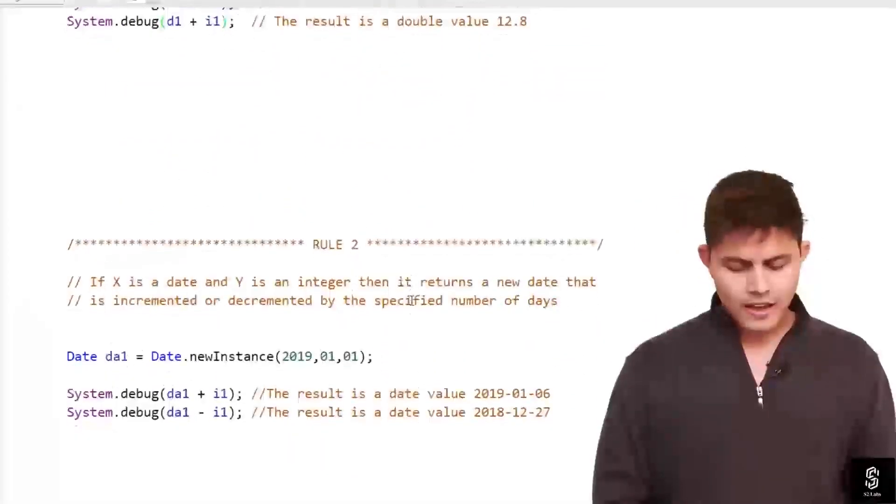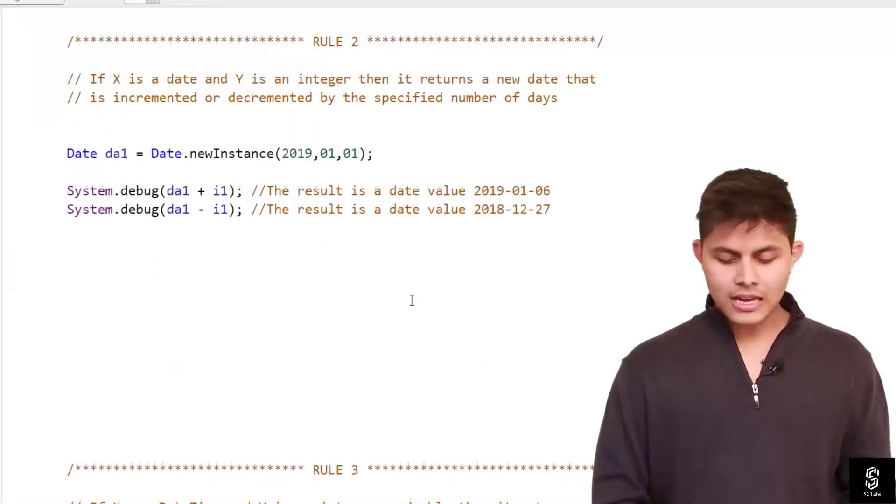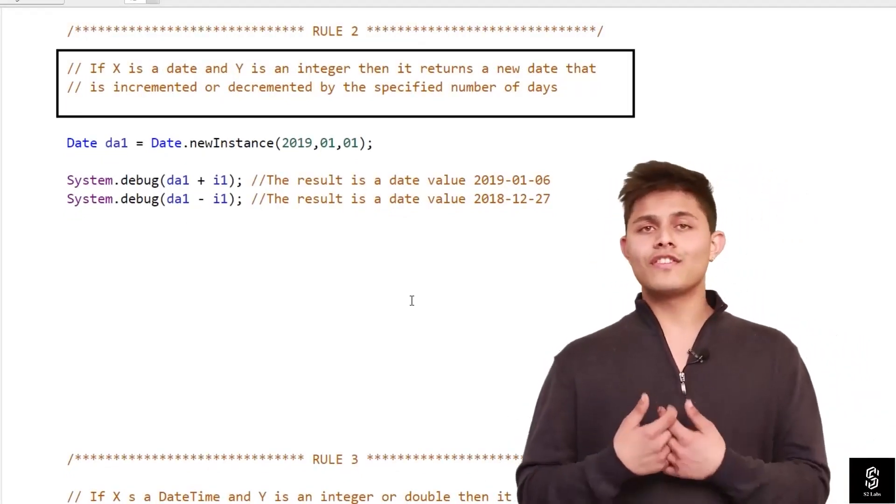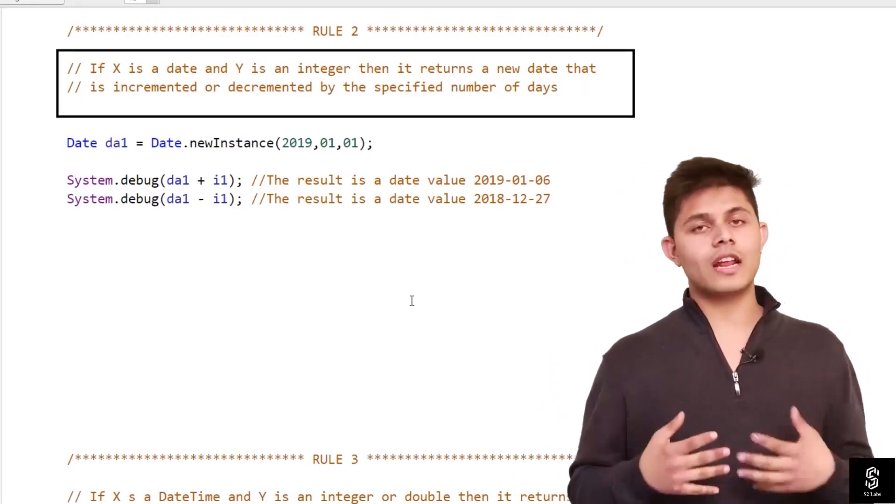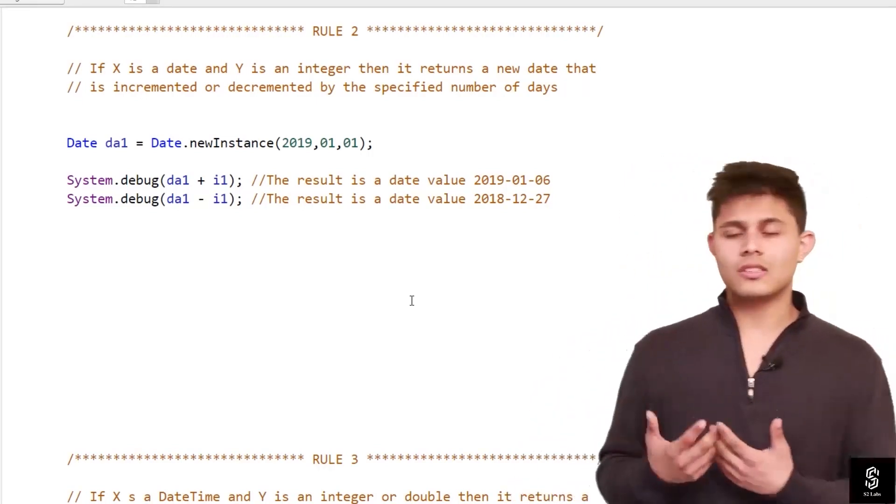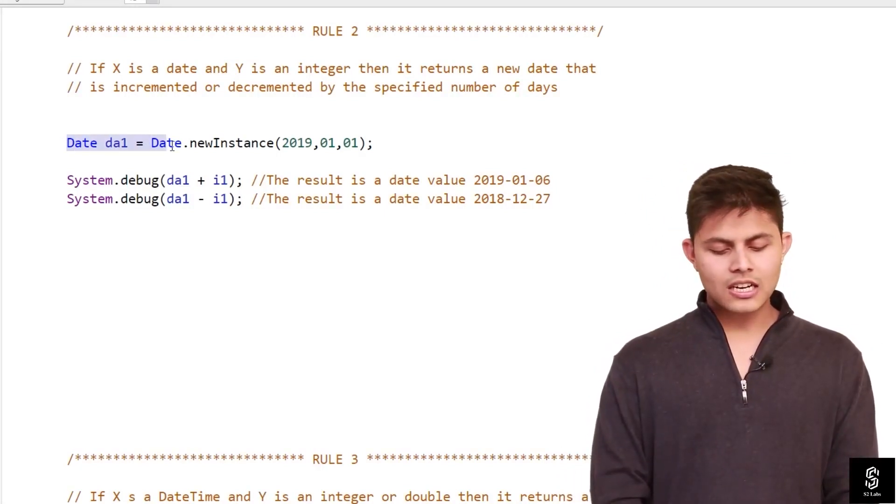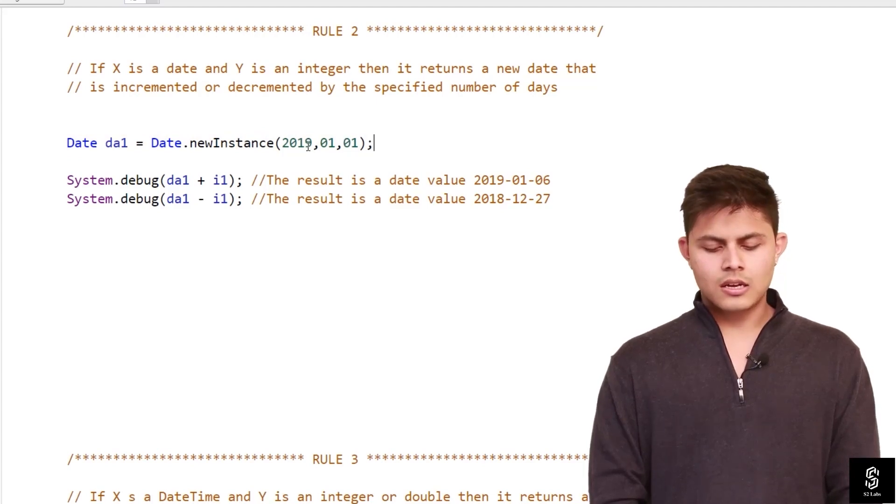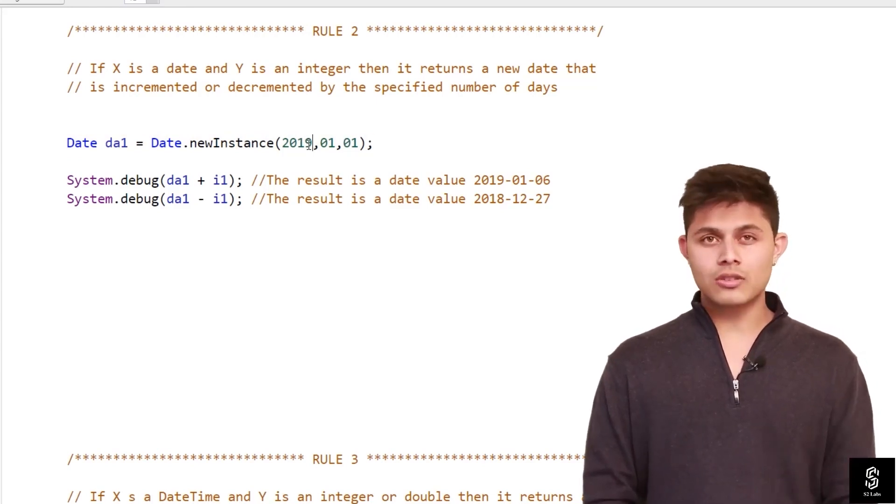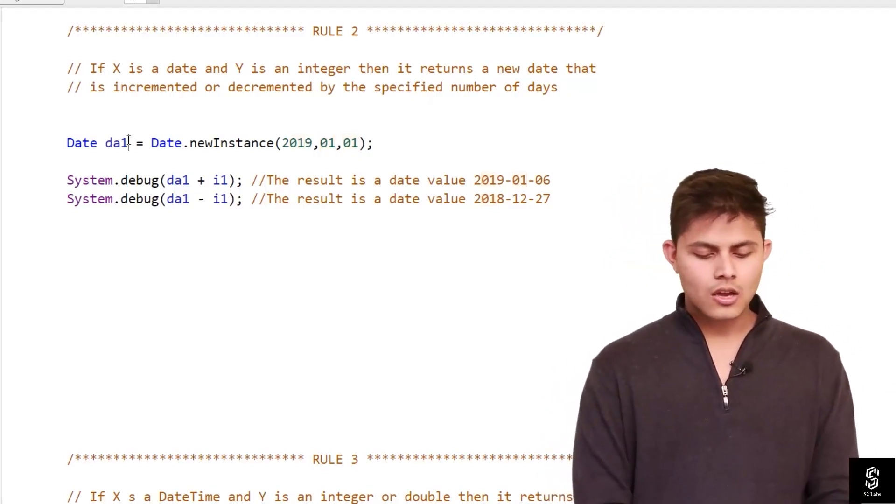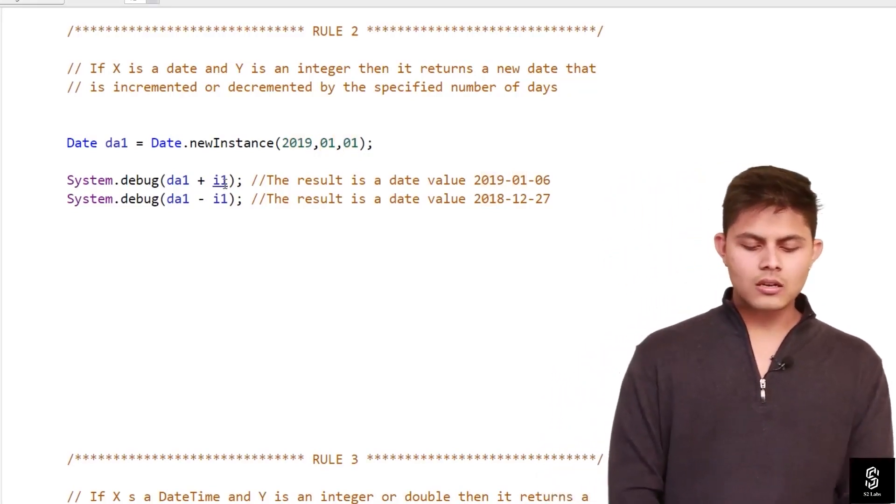Rule 2 is if x is a date and y is an integer, then it returns a new date that is incremented or decremented by the specified number of days. We discussed this earlier when I was explaining date data type, but let's discuss this once again. I've created a date variable in which I set the year as 2019, the month as January, and the date as 1st. So 1st January 2019 is the date we have in DA1.